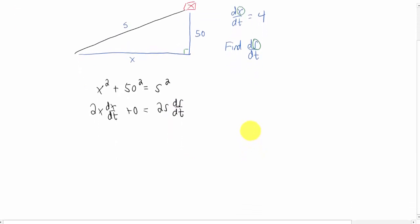Simplifying this equation just a little bit, in other words, just canceling the 2s, we get this equation right here.